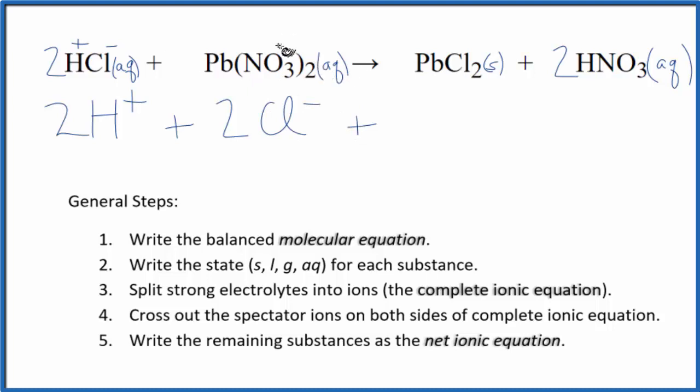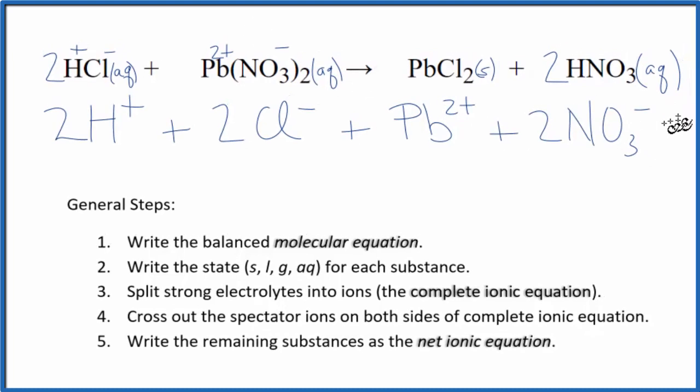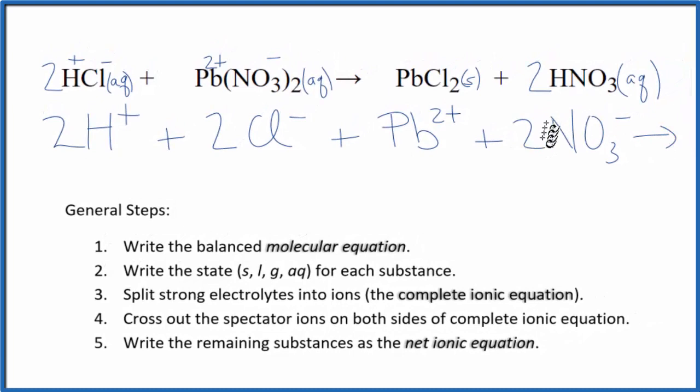For the lead 2 nitrate, nitrate always has a 1- charge. Lead's a transition metal, so we need to look at the nitrate to find its charge. With 2 of these negative charges, this will have to be 2+. That's why we called it lead 2. So this is our lead 2+ ion, and then we have 2 nitrate ions. Those are the reactants in our complete ionic equation.